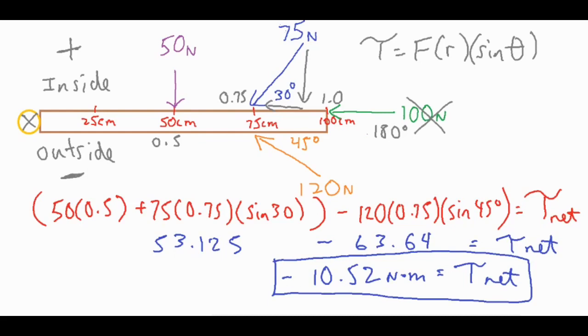So I combined my purple and my blue torques, and that's everything in between these parentheses here, and I called that my positive. So I had 53.125 newton meters of torque pushing from the inside to the outside.